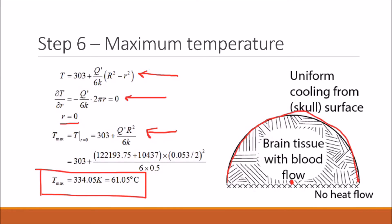We're also asked in this problem, if the blood flow rate increases, what will happen to the maximum temperature? So we can look at our equation for maximum temperature, which is just this equation here. And we need to remember that Q prime includes the effect of the blood flow rate.